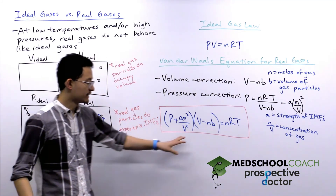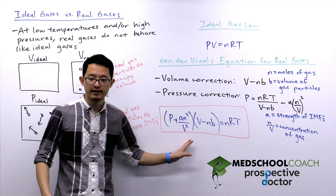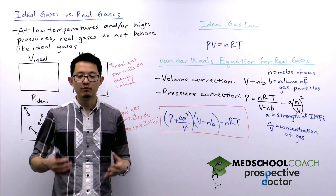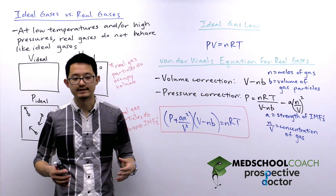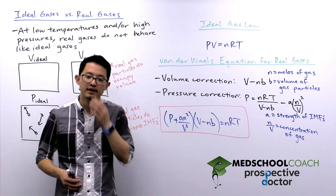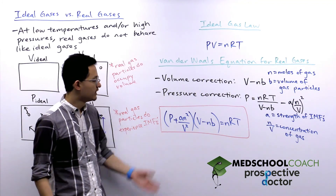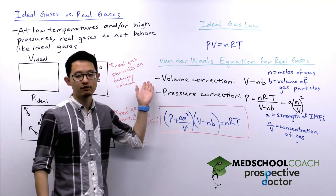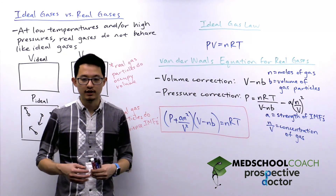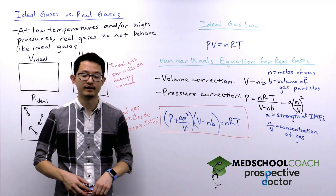On the MCAT, it's not very likely you'll need to do a calculation with this equation. More important is the conceptual understanding of where it comes from. Make sure you understand why we corrected for volume and why we corrected for pressure when comparing real gases to ideal gases.